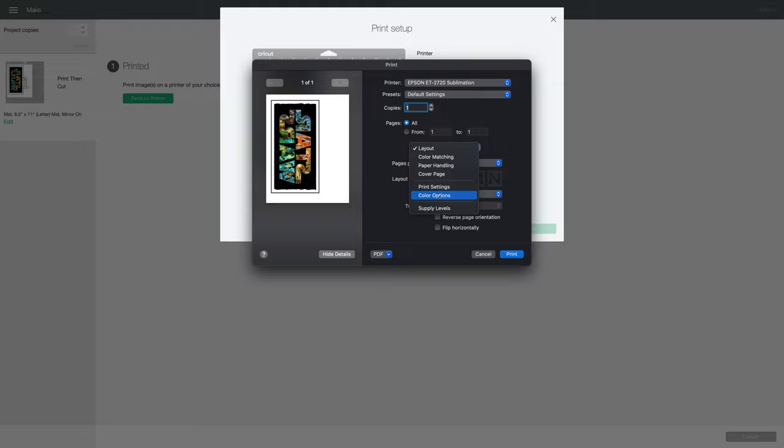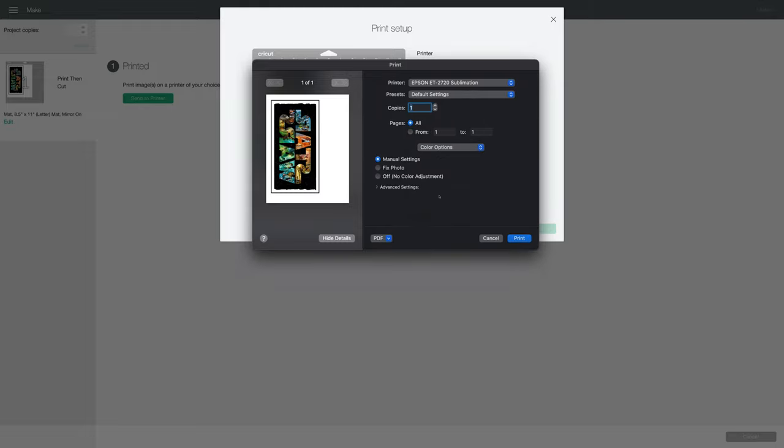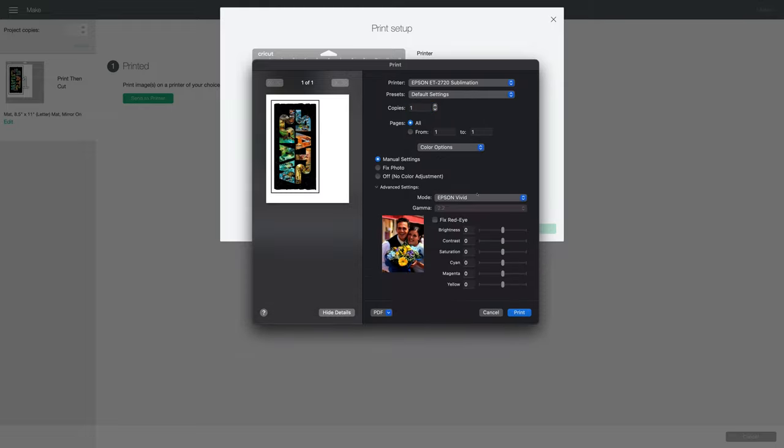Now I have color options. I'll choose that. Advanced settings and change Epson Vivid to Adobe RGB. Go back to color options.